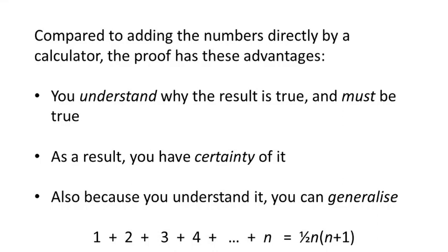Compared to adding the numbers directly by a calculator, the proof has these advantages. You understand why the result is true and must be true. As a result, you have certainty of it. Also, because you understand it, you can generalise. One plus two plus three plus etc., up to n is a half times n times n plus one.